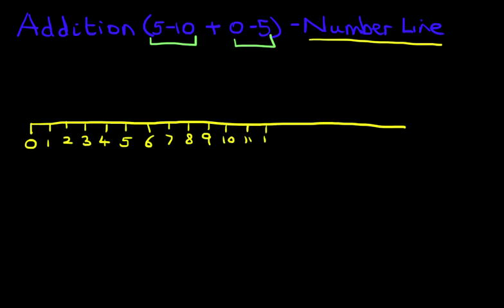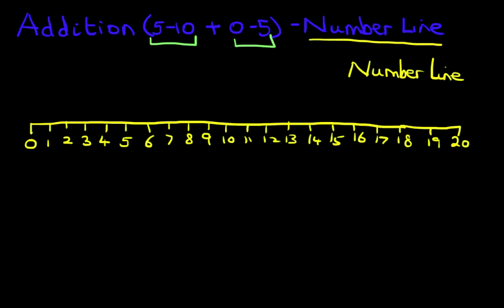We keep going. 14, 15, 16, 17, 18, 19 and 20. So that is our number line and it goes from 0 to 20.